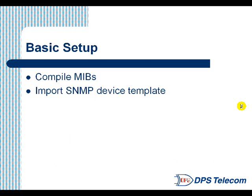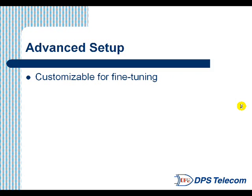Basic setup for the Tmon SNMP processor is quick. You just need to compile your MIBs — those are supplied by your SNMP device manufacturers — into Tmon, and then import SNMP device templates so Tmon can process incoming traps. They're databased as traps come in. You also have advanced setup options if you want to use them, where Tmon's SNMP capabilities are customizable for fine tuning.